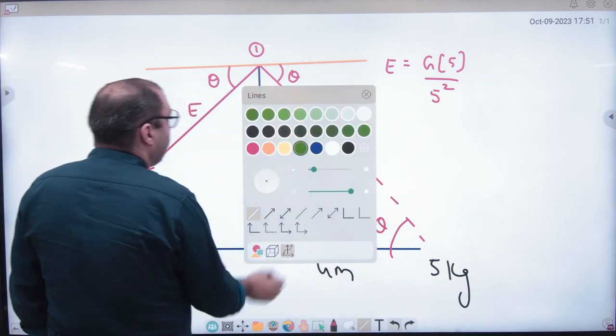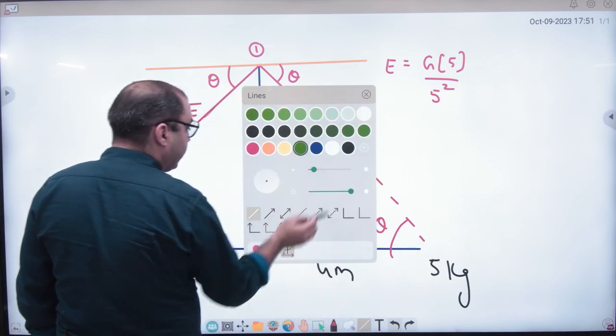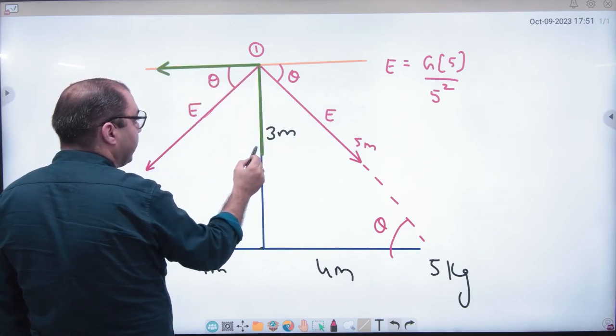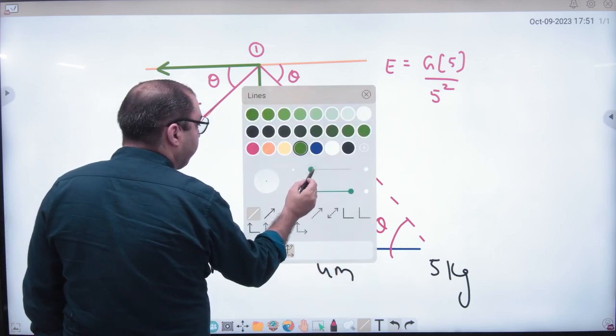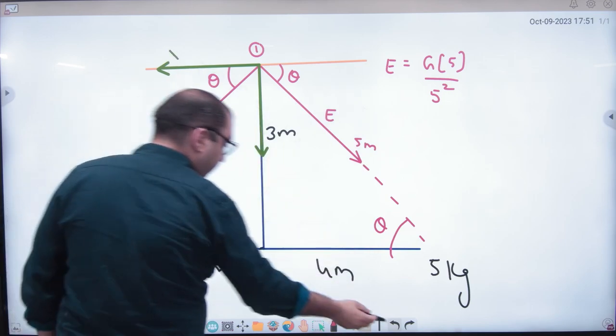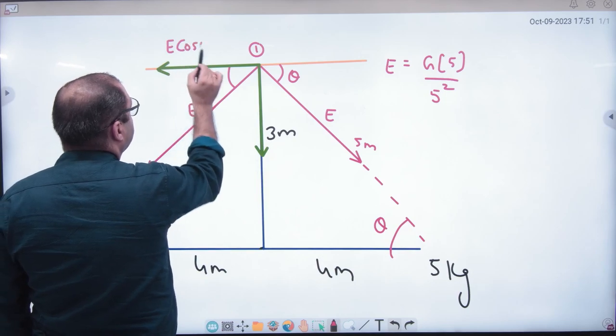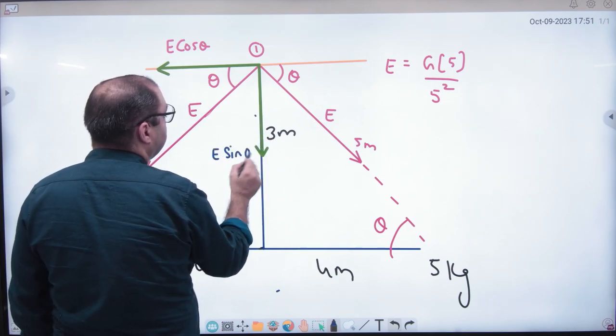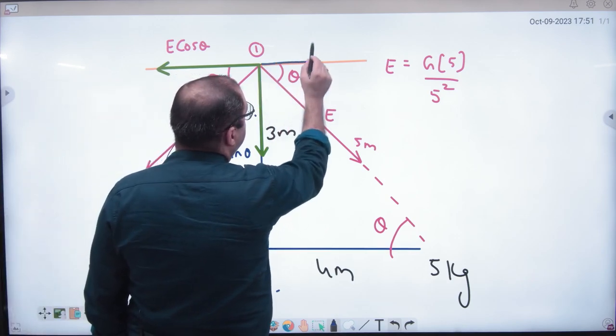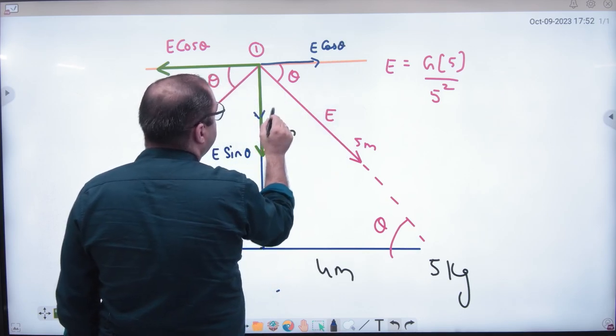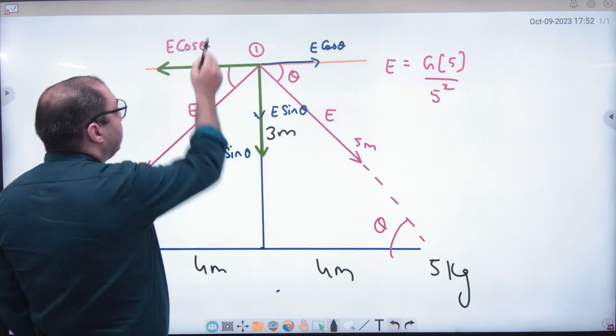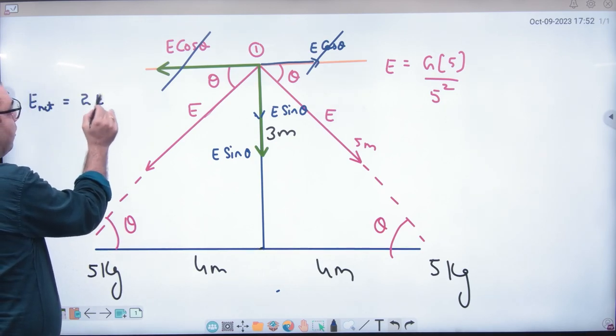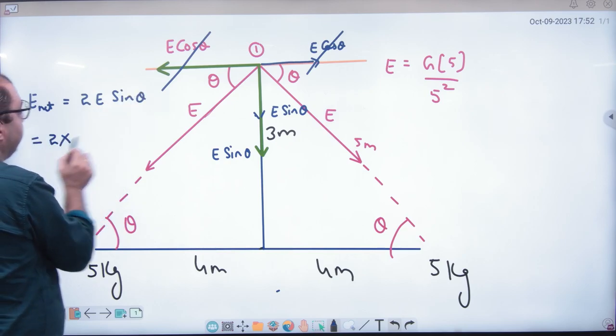Two components are the first component is the first component will, and component will be this and the second component will. This component will be E into cos of theta and what will E into sin of theta. Components is E into cos of theta and E into sin of theta. And this value will cancel net E to E sin theta. Now E already we know.